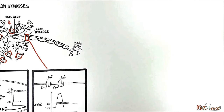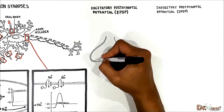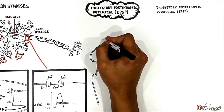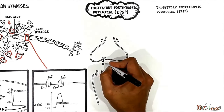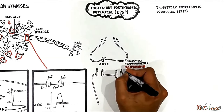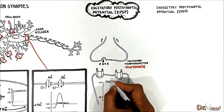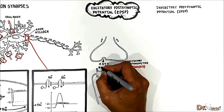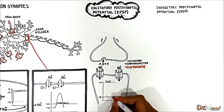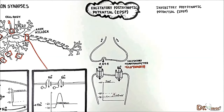Now we will talk about the differences between excitatory postsynaptic potential and inhibitory postsynaptic potential. When a presynaptic membrane depolarizes, suppose it releases glutamate, an excitatory neurotransmitter. Glutamate attaches to its receptor in the postsynaptic membrane and opens non-selectively permeable channels for sodium and potassium. Because of the net force, sodium influx dominates over potassium efflux, and the sodium influx makes the membrane potential less negative.